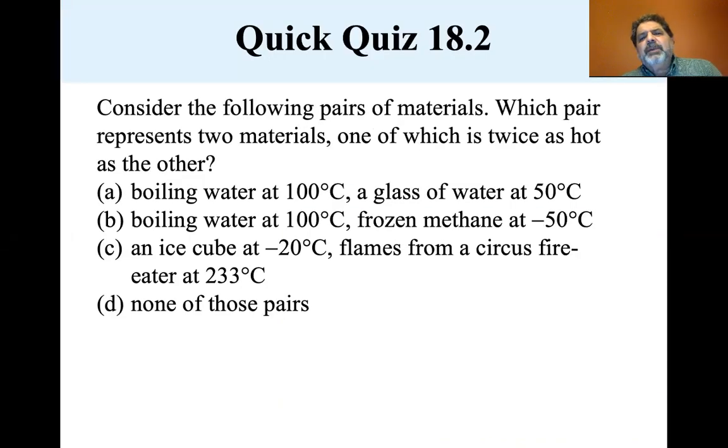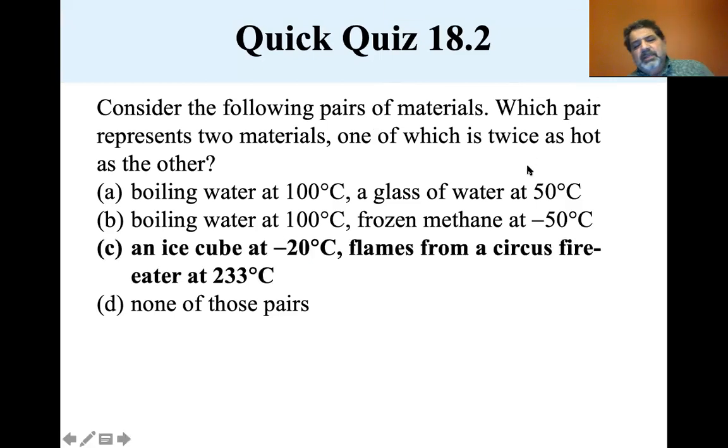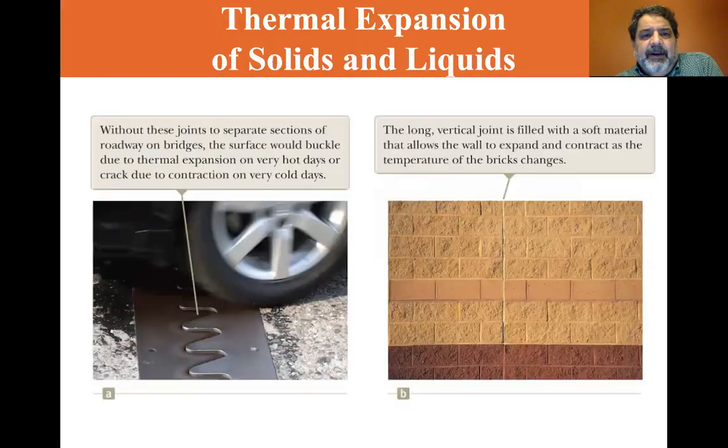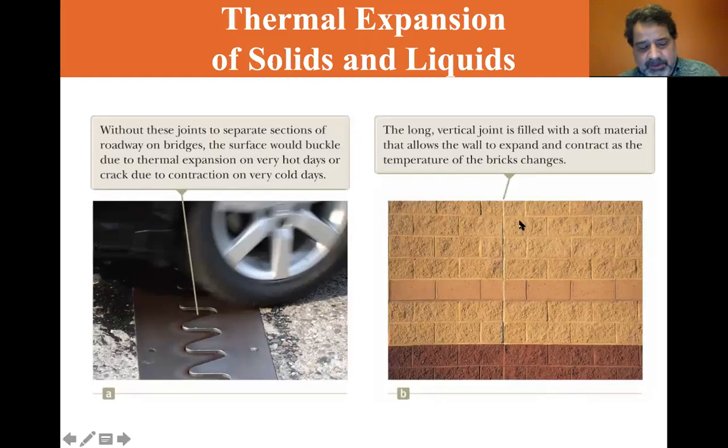So consider the following pairs of materials, which pair represents two materials, one of which is twice as hot as the other. Now if you convert these to Kelvin, you'll see that it's the ice cube at 20 degrees C, and the flames from a circus fire eater at 233 degrees C. Work it out, calculate it yourself, and you'll see. And in the next video, we'll talk about thermal expansion of solids and liquids.